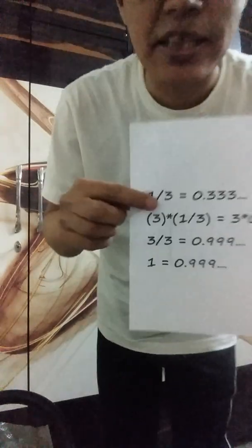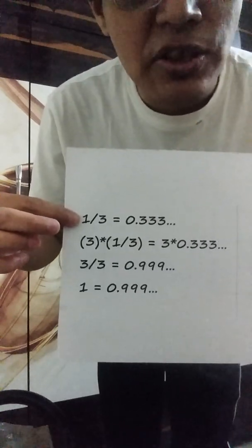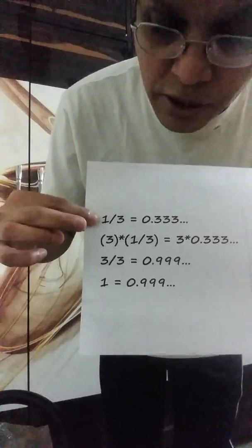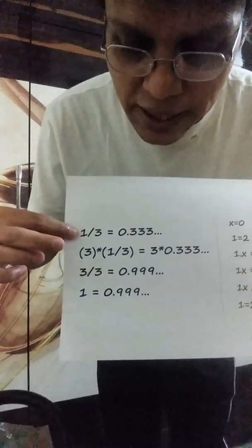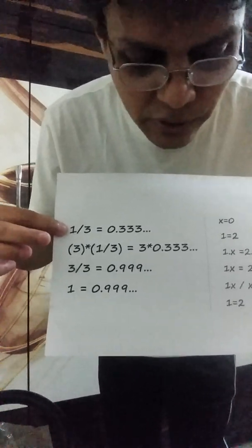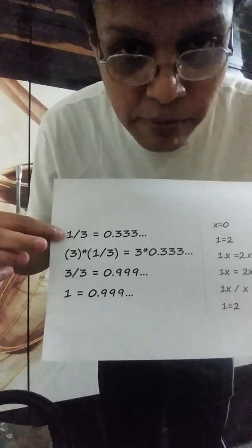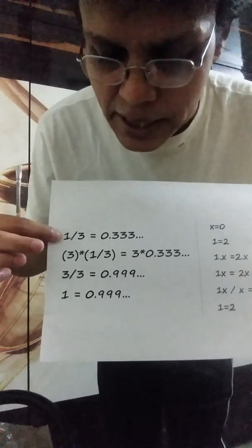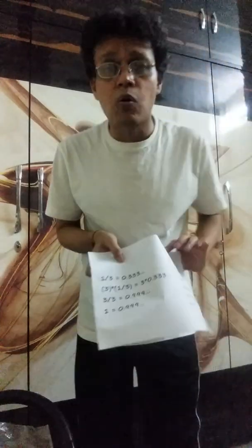Here's another problem. One-third equals 0.333... If we multiply both sides by 3, we get 3 times one-third equals three-thirds equals 1. Likewise, 0.333... multiplied by 3 gives 0.999..., and that equals 1. A student proved this very simply — my friends got convinced in 30 seconds. Is it right?